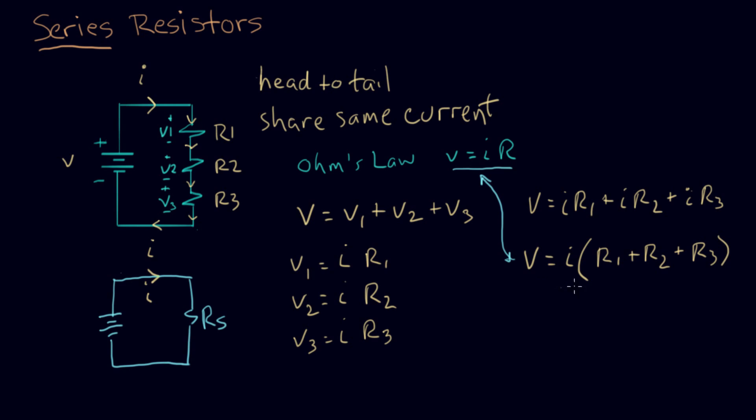So in our case, to get the same current to flow there, I would say V equals I times R series. In which case, what I've done is I've said that R series is what? Is the sum of these three things: R1 plus R2 plus R3.